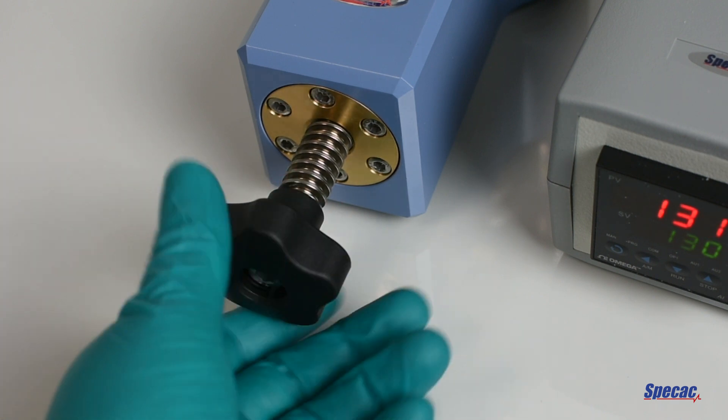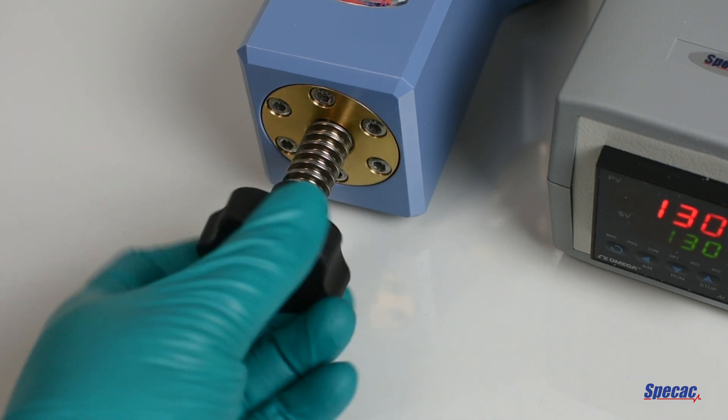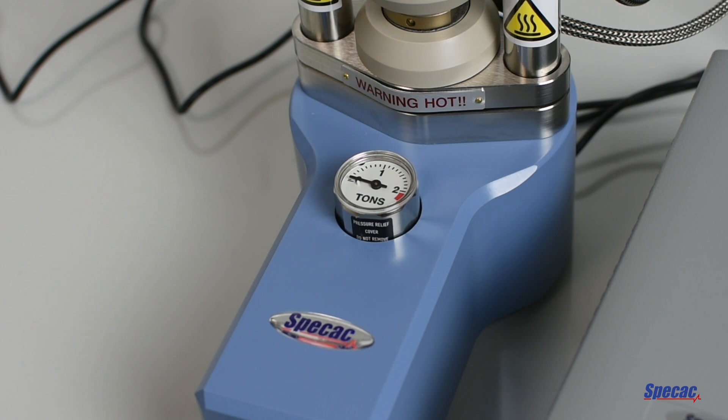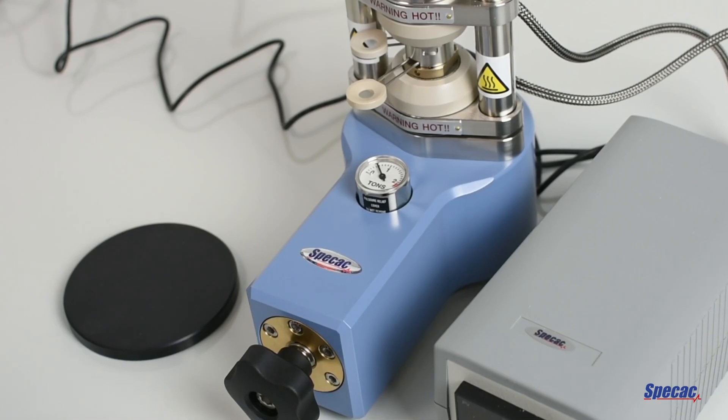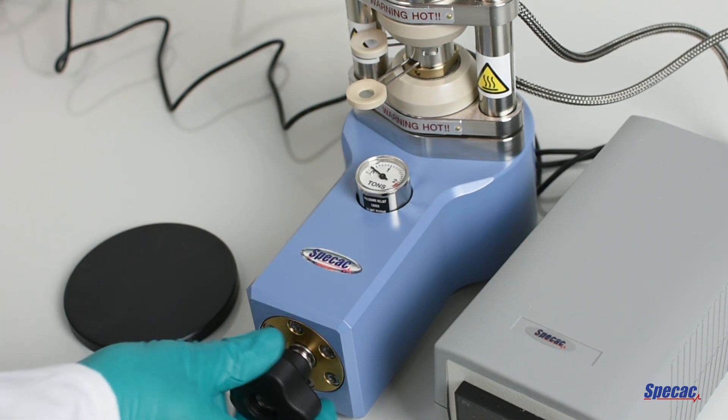Now turn the screw on the front of the press to begin applying hydraulic pressure. An indicated load of 0.5 tons is usually sufficient to form a thin film, as shown here. The applied load is typically held for 30 seconds and then released by unwinding the pressure screw all the way back to its start position.